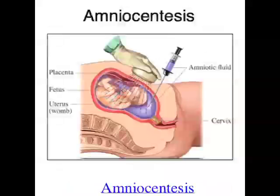Another test is amniocentesis, which is carried out later in pregnancy, and it involves removing a sample of the amniotic fluid — the fluid that surrounds the foetus. Just like most of the dust in your house is actually dead skin cells, there are baby skin cells in the amniotic fluid. So if we can get some amniotic fluid, we can then get some foetal cells and test the foetus's DNA to see if they've got any sort of genetic disorder.